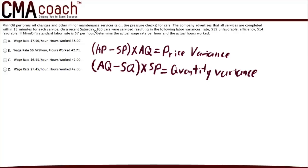The standard quantity is the standard number of hours to service 160 cars. The standard is a quarter of an hour per car multiplied by 160 cars, which equals 40 hours.